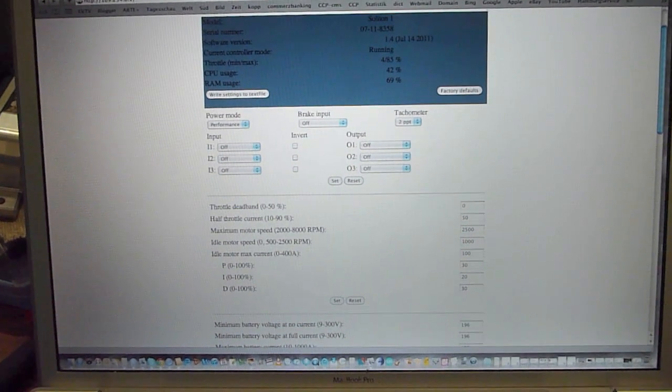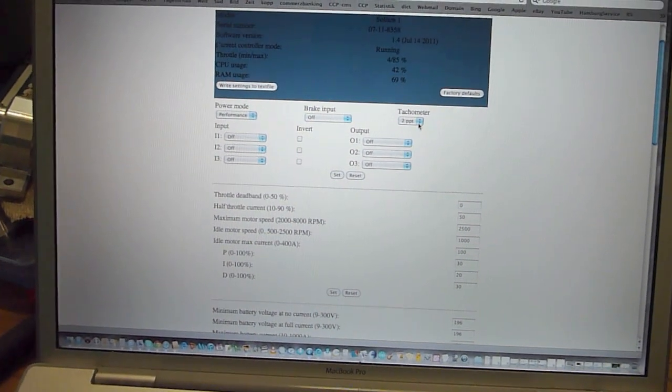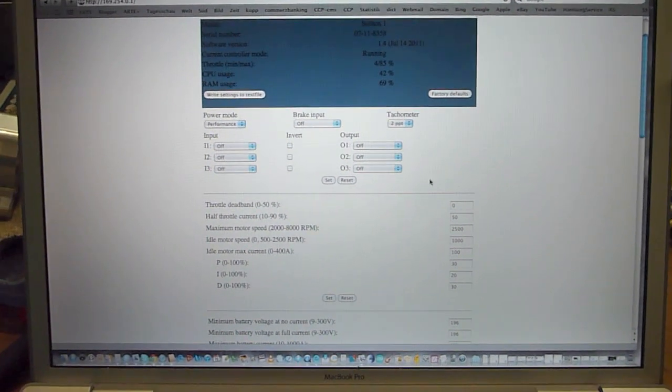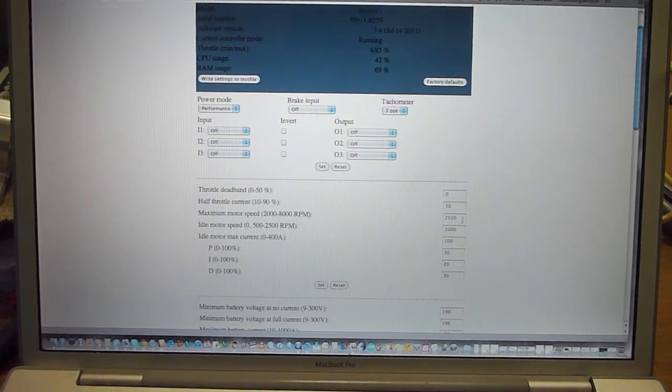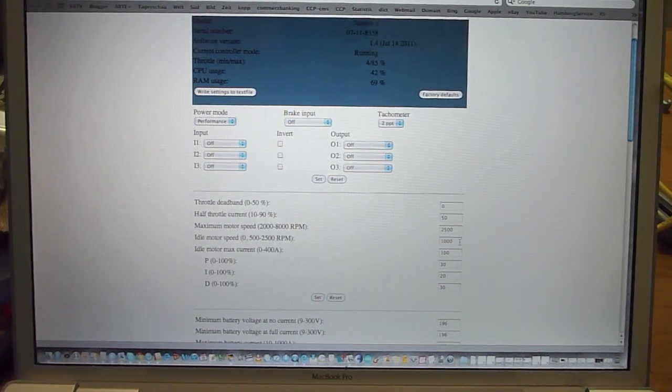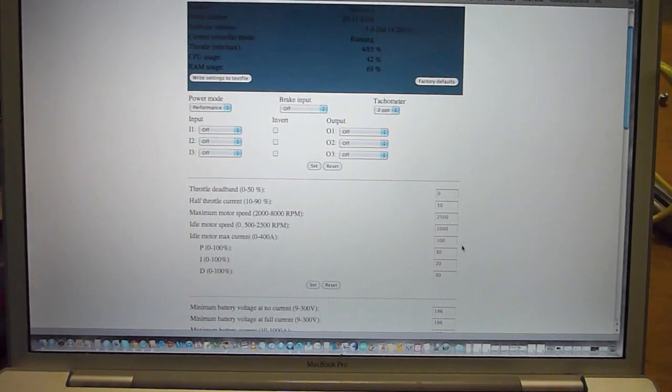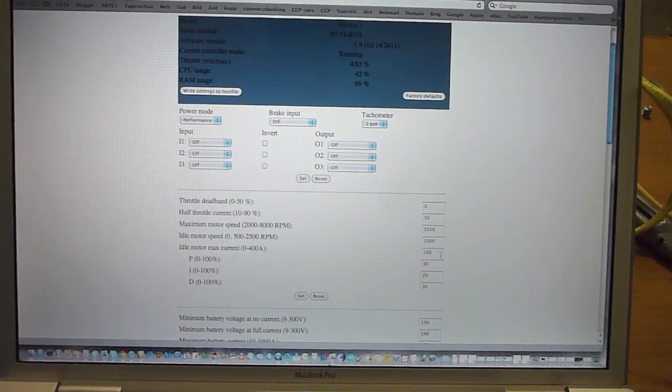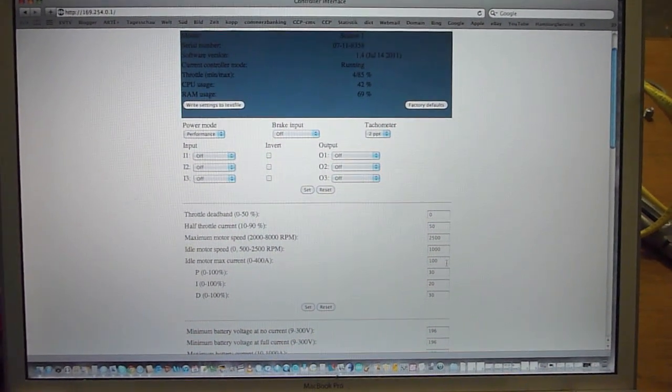I set the Soliton now to two pickup sensor screws here. We have it on 250 RPM maximum and 1000 idle motor speed and some 100 amps for the idle speed.